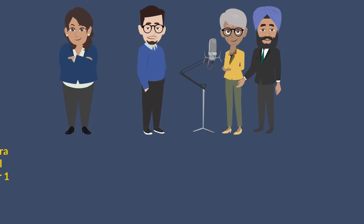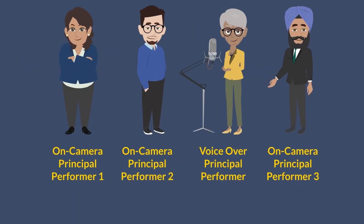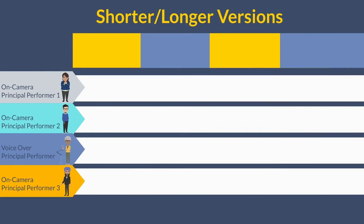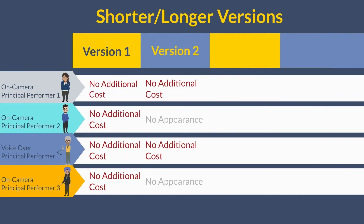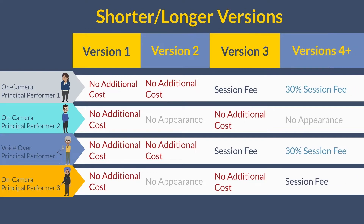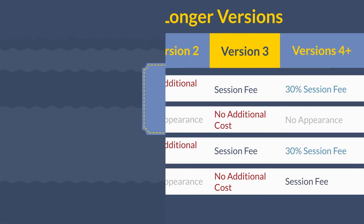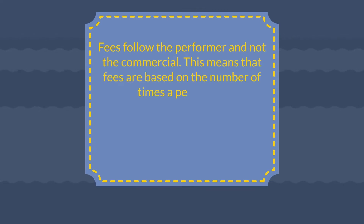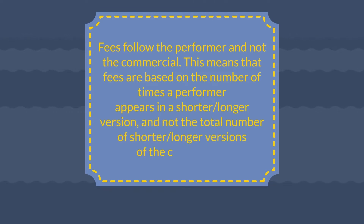Now let's talk about the third element: the performer's payments. Payment for principal performers is based on the number of versions they appear in. For each principal performer, the first and second versions are included at no additional cost. The third shorter or longer version triggers a payment of a session fee, and every additional version thereafter triggers a payment of 30% of a session fee. Remember, fees follow the performer and not the commercial. This means the fees are based on the number of times a performer appears in a shorter or longer version, and not the total number of shorter or longer versions of the commercial.